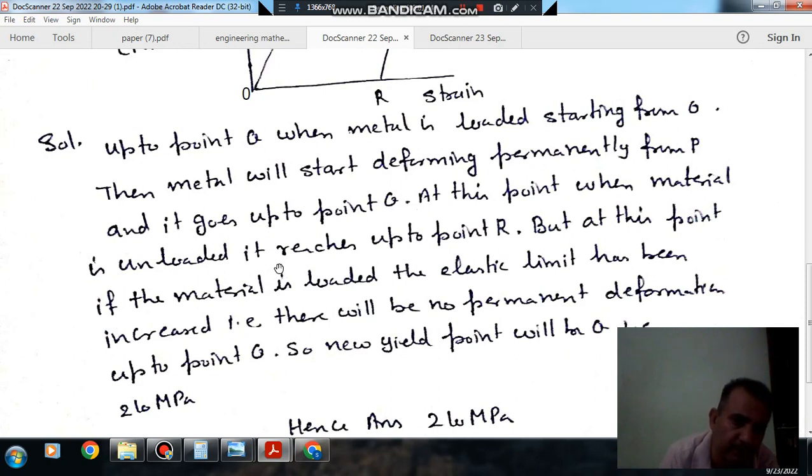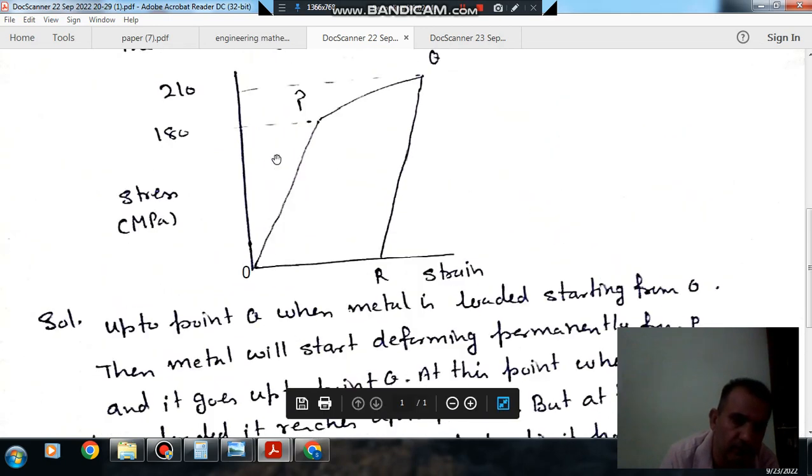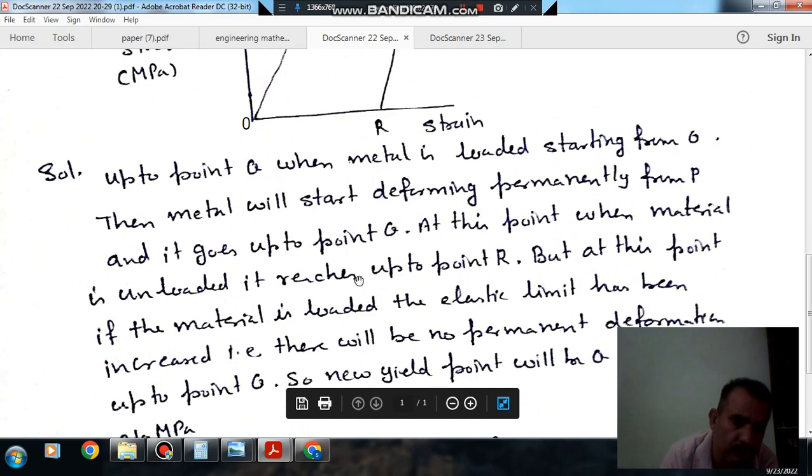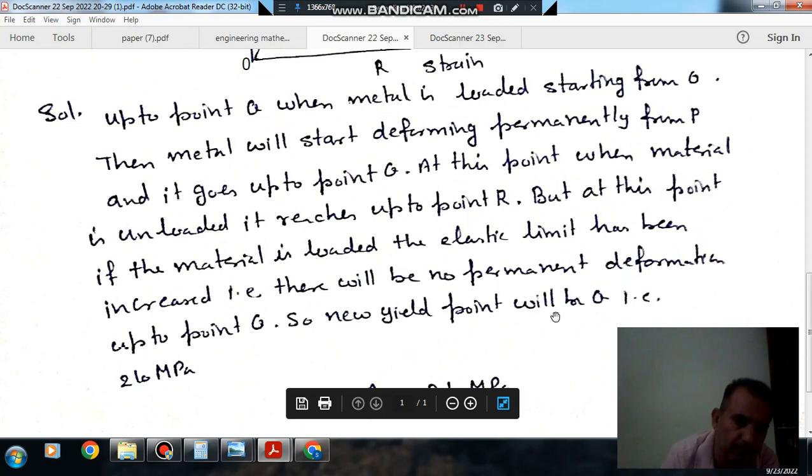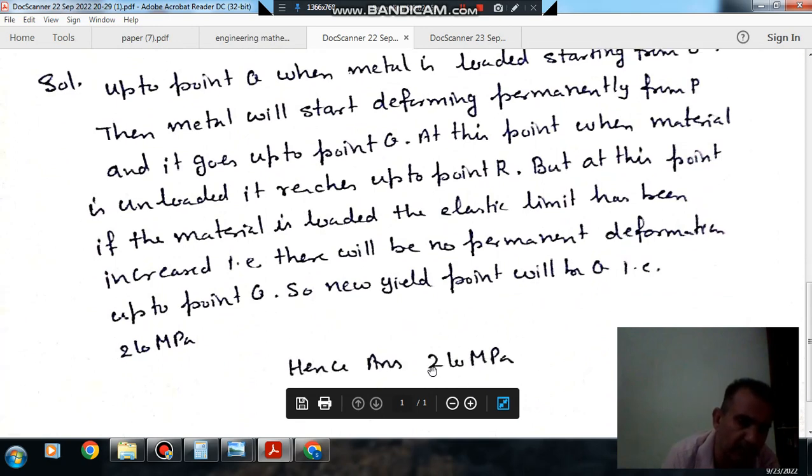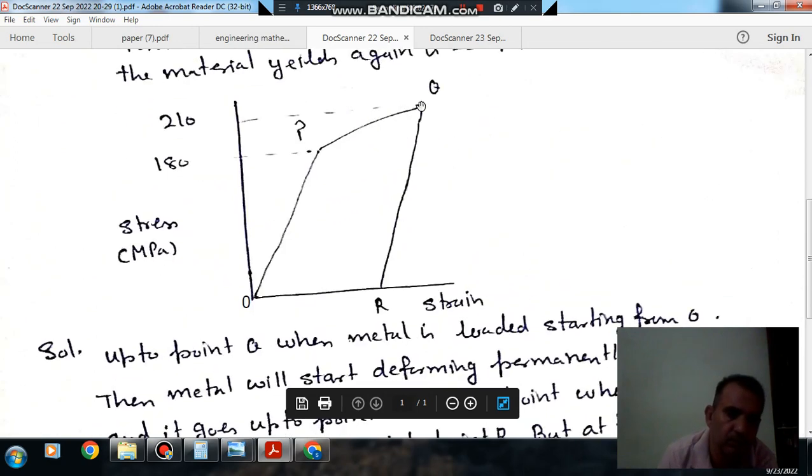At this point when the metal is unloaded it reaches to point R, but at this point when it is loaded, the elastic limit has been increased. So this limit has been changed to Q. There will be no permanent deformation up to point Q. So new yield point will be at 210 MPa.